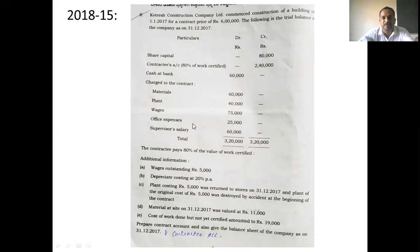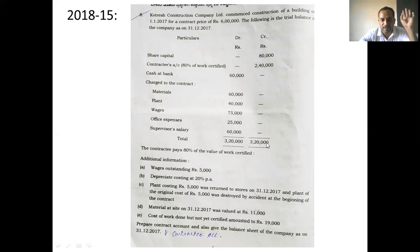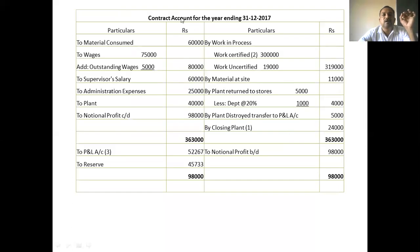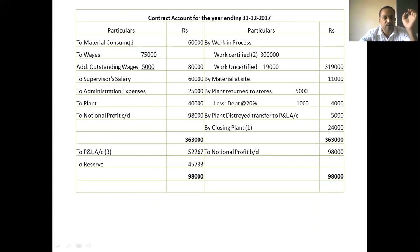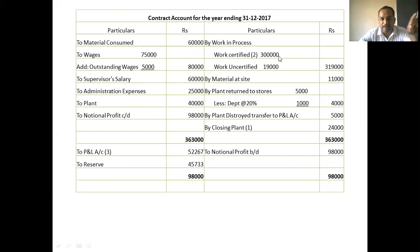For Problem 2, we prepare the contract account for the year ending 30-12-2017. Entries: material consumed Rs. 60,000; wages Rs. 75,000 plus outstanding Rs. 5,000 totalling Rs. 80,000; supervisor Rs. 60,000; administration expenses Rs. 25,000; plant Rs. 40,000.